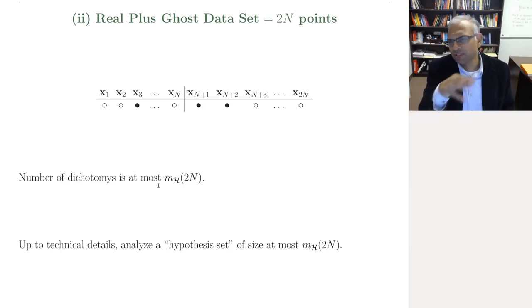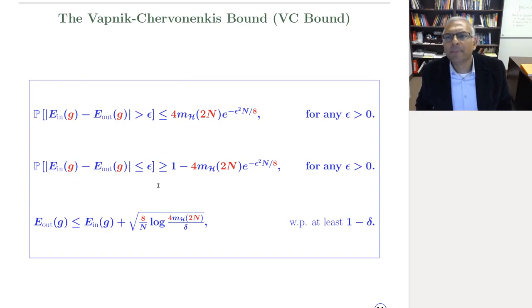And when you collect all these technical details together, together with the insight that to compare E_in to E_out, it suffices to compare E_in to E_in prime, we get the generalization bound that we want.